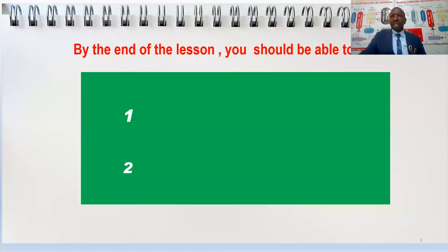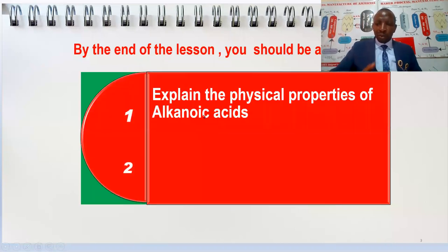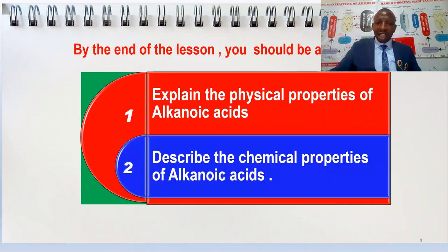What are some of the lesson objectives? By the end of the lesson, you the learner should be able to explain the physical properties of alkanoic acid and describe some of the chemical properties of alkanoic acids.